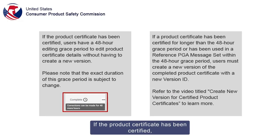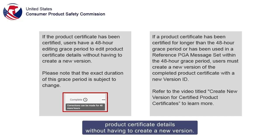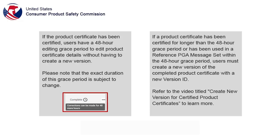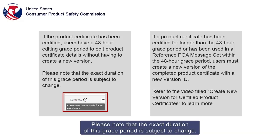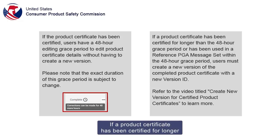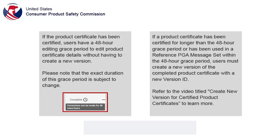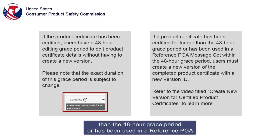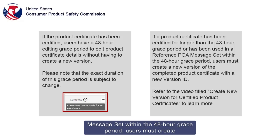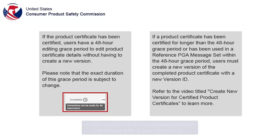If the product certificate has been certified, users have a 48-hour editing grace period to edit product certificate details without having to create a new version. Please note that the exact duration of this grace period is subject to change. If a product certificate has been certified for longer than the 48-hour grace period, or has been used in a reference PGA message set within the 48-hour grace period, users must create a new version of the completed product certificate with a new version ID.